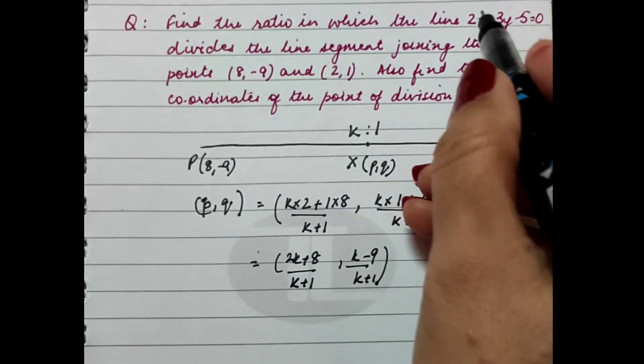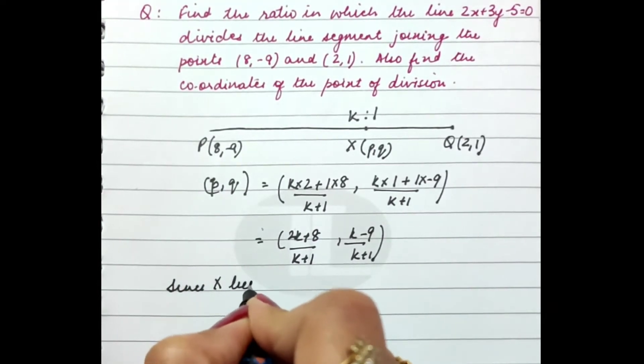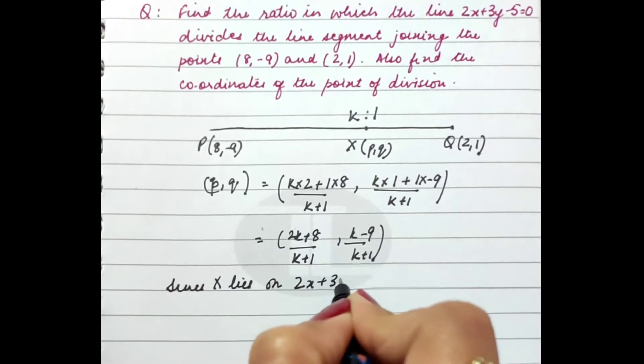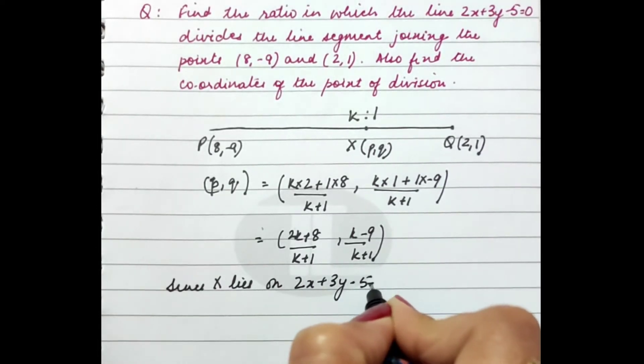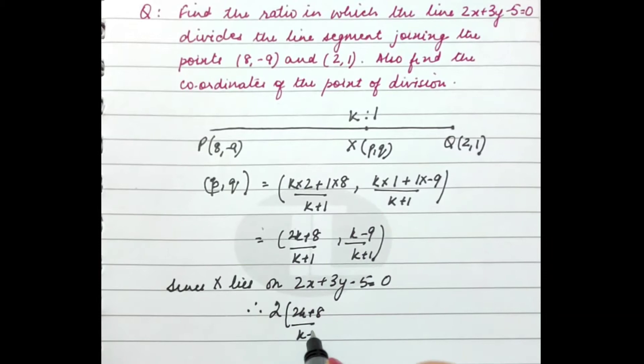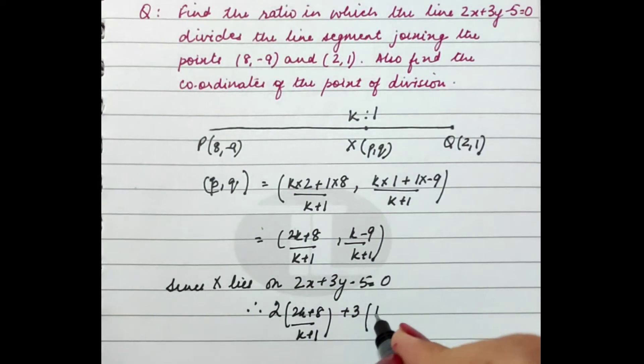That means it will satisfy the equation. Since X lies on 2x + 3y - 5 = 0, we can write: 2(2k+8)/(k+1) + 3(k-9)/(k+1) - 5 = 0.